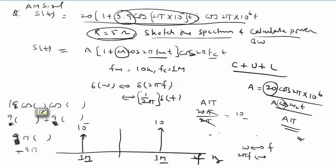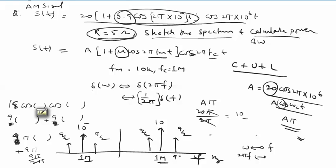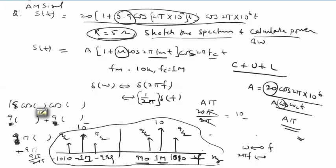Upper sideband magnitude is 9/2 = 4.5 at frequency (1 MHz + 10 kHz) = 1010 kHz, and also at -1010 kHz. Lower sideband magnitude is 4.5 at (1 MHz - 10 kHz) = 990 kHz, and at -990 kHz. The negative-side counterparts are at -1 MHz ± 10 kHz. This completes the spectral representation of the AM waveform with all amplitudes and frequencies marked.